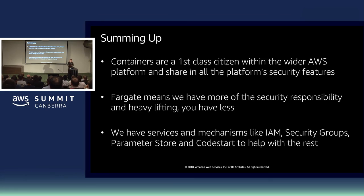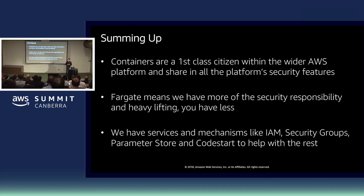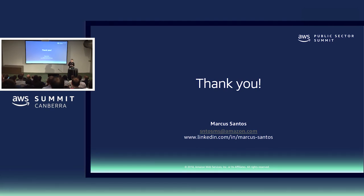Summing up: containers are first-class citizens on AWS. Anything you can do security-wise on EC2, you can do with ECS and Fargate. Fargate means AWS does more from a security perspective — you don't need to worry about scaling or securing the operating system, just take care of your container image. Mechanisms that can help you enforce security are IAM, Security Groups, Parameter Store, Secrets Manager, and CodeStar. Thank you for your attention — my contacts are there and I'm here for questions and answers.